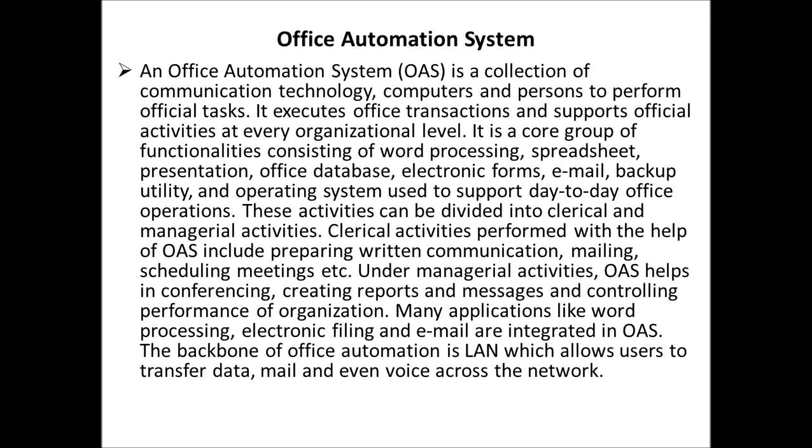Next, we can discuss office automation systems. An office automation system is a collection of communication technology, computers and persons to perform official tasks. It executes office transactions and supports official activities at every organizational level. It is a core group of functionalities consisting of word processing, spreadsheet, presentation, database, electronic forms, email, backup utility and operating system used to support day-to-day office operations.